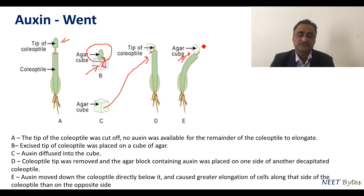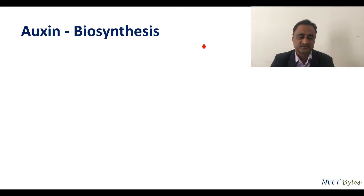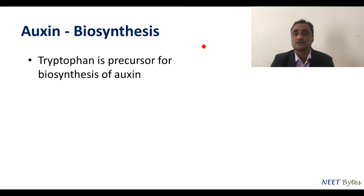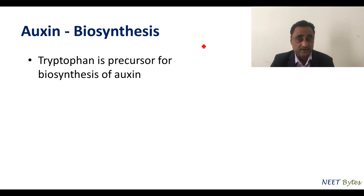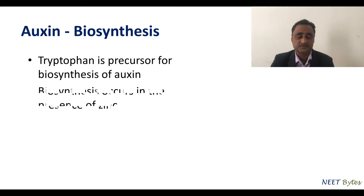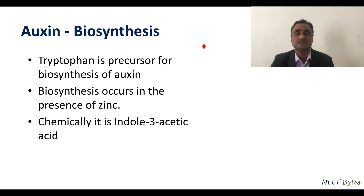Regarding biosynthesis, tryptophan is the precursor for auxin. Tryptophan is an amino acid and requires zinc. So biosynthesis of auxin occurs in the presence of zinc, and chemically auxin is indole-3-acetic acid.